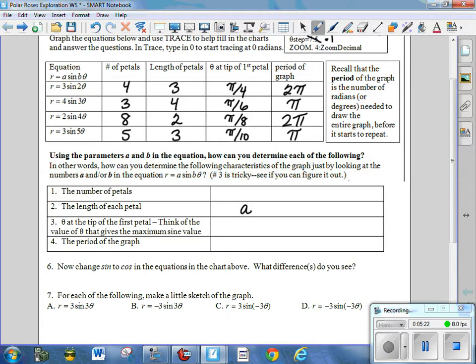Now, the number of petals is associated with the number b. Notice that sometimes we have, when b is 2, we have 4 petals. When b is 4, we have 8 petals. When b is 3, we have 3 petals. When b is 5, we have 5 petals. It turns out, if b is even, then the number of petals is 2b. You double it. If b is odd, the number of petals is just b.